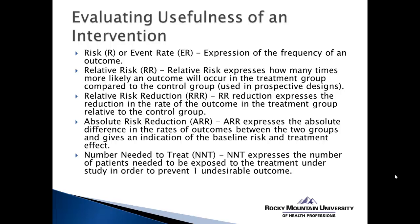One is for participants in the experimental group, known as the experimental event rate, or EER. The other is the event rate for the control group — the group not receiving the intervention — known as the CER. These are basically expressions of the frequency of a particular outcome: what proportion of subjects in either group had the adverse outcome.